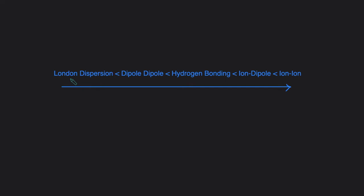The five main types of intermolecular forces you'll see in most chemistry classes are these. London dispersion forces, sometimes also called van der Waals forces, are the weakest and exist in every compound. Dipole-dipole is the next weakest and exists in polar molecules only. Then hydrogen bonding is the next strongest and exists in compounds that have H-F, H-O, or H-N. And then you have ion-dipole and ion-ion, which are the intermolecular forces that exist in ionic compounds. Ion-ion is the strongest and London dispersion forces are the weakest.